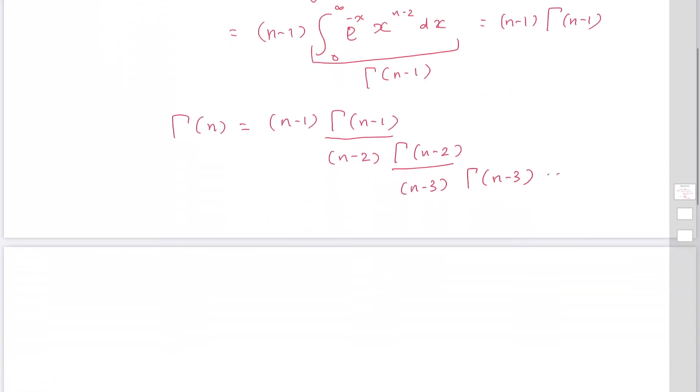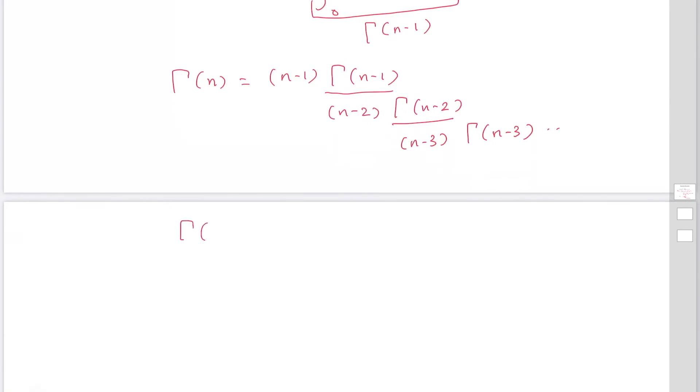This way, finally, gamma n equals n-1 times n-2 times n-3 and so on, up to 1, times gamma 1.